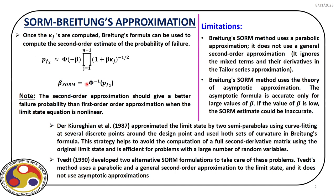In this model there are some approximations and limitations. The two major limitations of Breitung's proposal are: first, it uses parabolic approximation and does not consider all the mixed terms and their derivatives in the Taylor series expansion. So the second order derivative considered does not include mixed terms. Second, Breitung used an asymptotic approximation to evaluate the multivariate standard normal PDF. This asymptotic formula is accurate only for large beta, and if beta is low, the estimate is inaccurate.